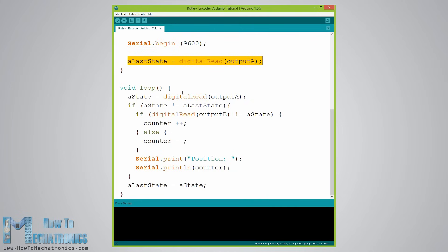Then, in the loop section, we read the output A again, but now we put the value into the A state variable. So, if we rotate the encoder and a pulse is generated, these two values will differ and the first if statement will become true. Right after that, using the second if statement, we determine the rotation direction. If the output B state differs from the output A state, the counter will be increased by one, else it will be decreased.